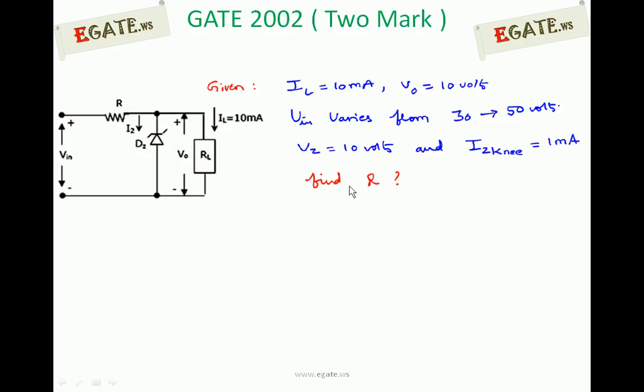We need to find the value of R. Let I be the current flowing through resistor R. So I can be written as Iz plus IL. Current flowing through R divides into zener diode as well as load, so I = Iz + IL.